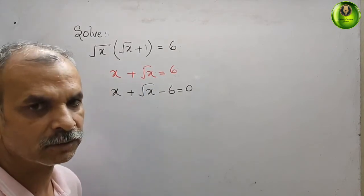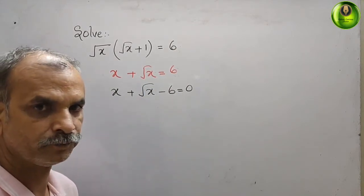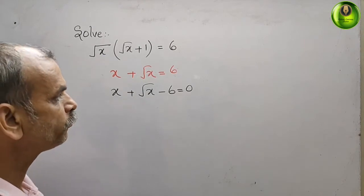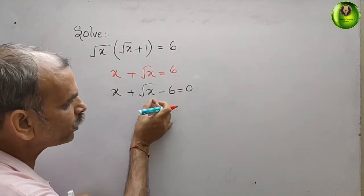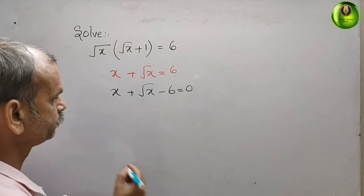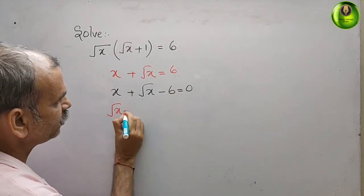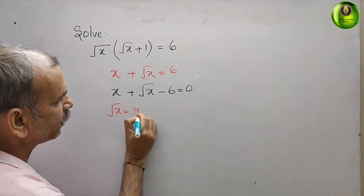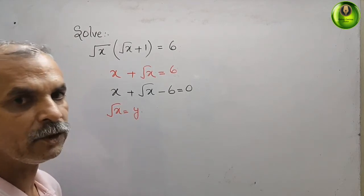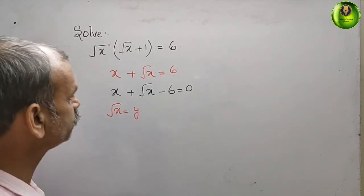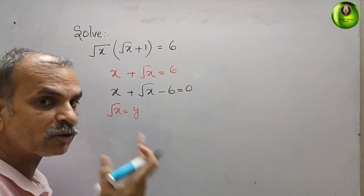We haven't solved this type of question before, so we will reduce it. For reducing, we take the substitution: let √x = y. So x becomes y², and our new equation is y² + y - 6 = 0.